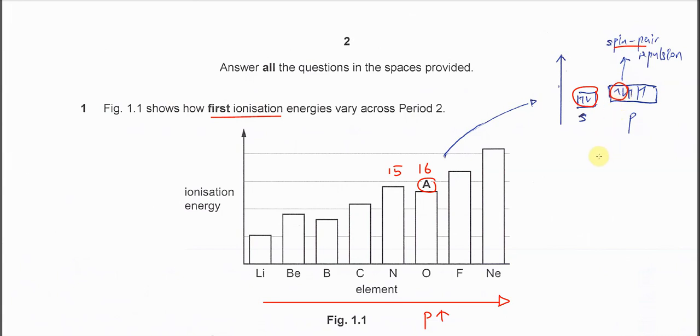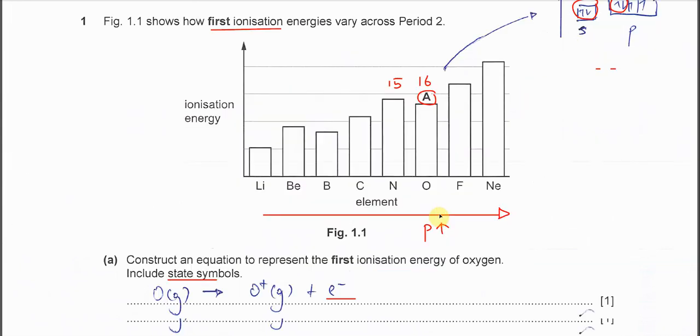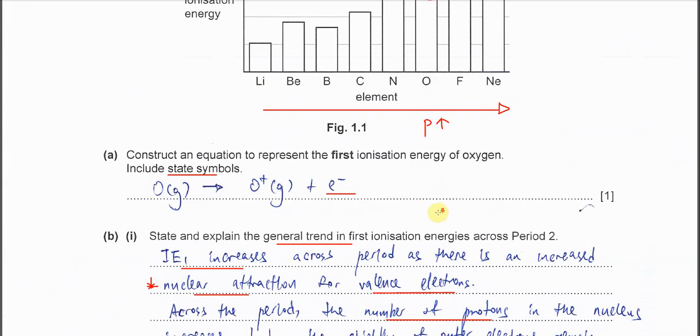And this repulsion, because these electrons, they are negative charge. Negative and negative particles, they have repulsion. And these effects we call spin pair repulsion. Because of this spin pair repulsion, the electrons release easier. So the electrons, once it's released easier, means it needs lesser energy. That's why the IE slightly decreases. Because the energies needed to remove this electron is easier now.